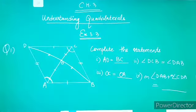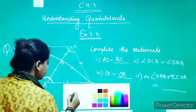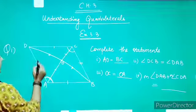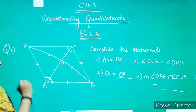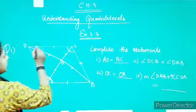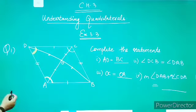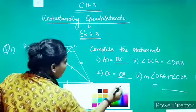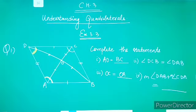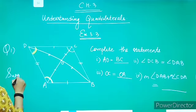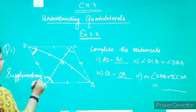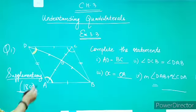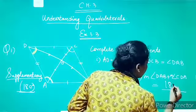Next, measure of angle DAB plus measure of angle CDA. These are adjacent angles. When we were discussing the properties of parallelogram, we had a property called the adjacent angles are always supplementary. Supplementary means their sum comes up to be 180 degrees. So this means angle A plus angle D, their sum should be 180 degrees. So, we are done with question number 1.